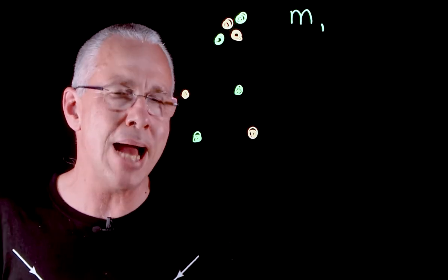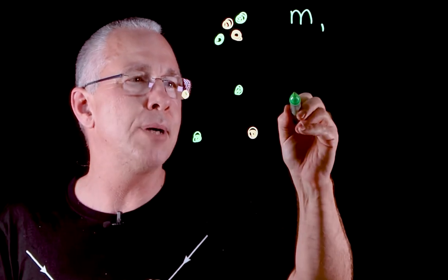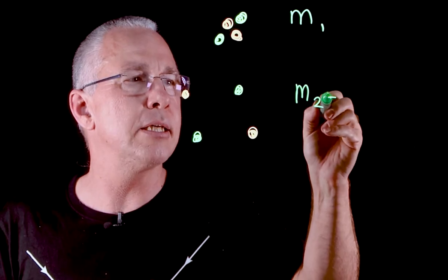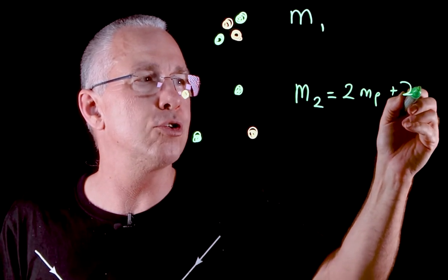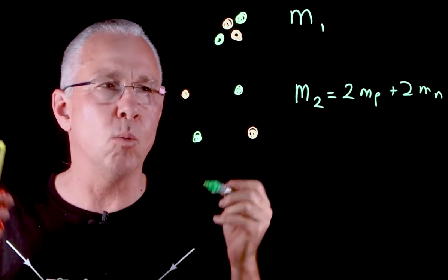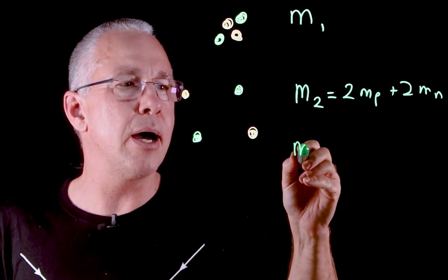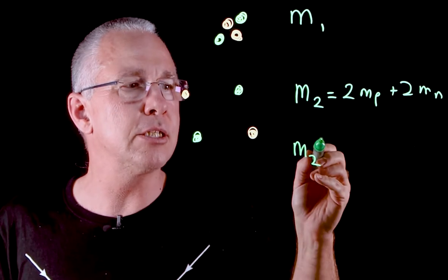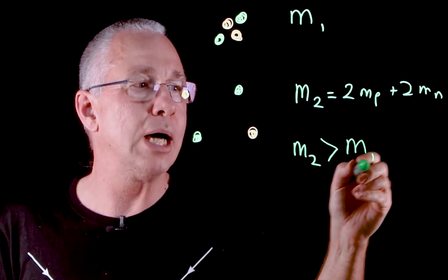Now I can work out my mass of the individual parts. So my mass two ends up being my two protons plus my two neutrons, and what I discover is that my mass two is greater than my mass one.